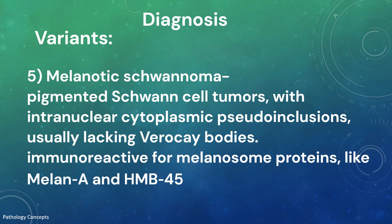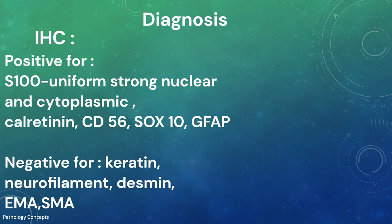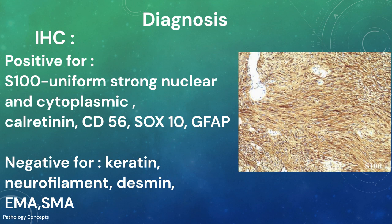Melanotic schwannomas are S100 immunoreactive but negative with GFAP. This tumor shows ultrastructural evidence of melanosome formation and is immunoreactive for melanosome proteins such as Melan-A and HMB45. Other variants include microcystic schwannoma and neuroblastoma-like variant.